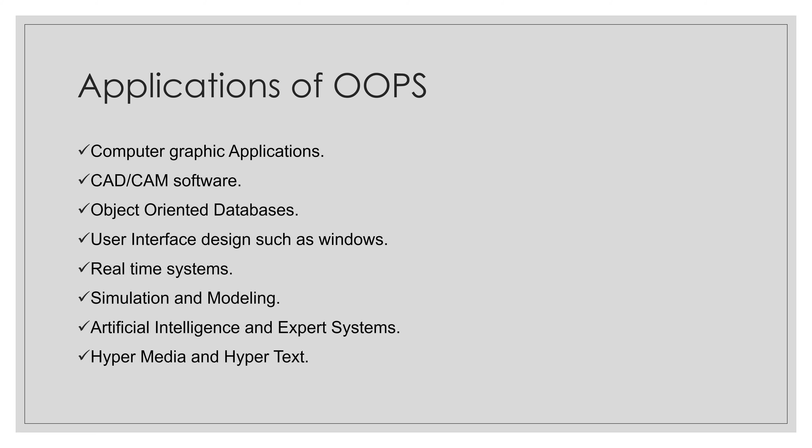The last application is hypermedia and hypertext. Hypermedia is a superset of hypertext — documents having hypermedia contain links not only to other text but also to images, sound, and other media. Hypertext is similar to regular text but contains pointers to other text. This covers the basic concepts of OOPs: programming paradigms, characteristics, advantages, disadvantages, and applications.